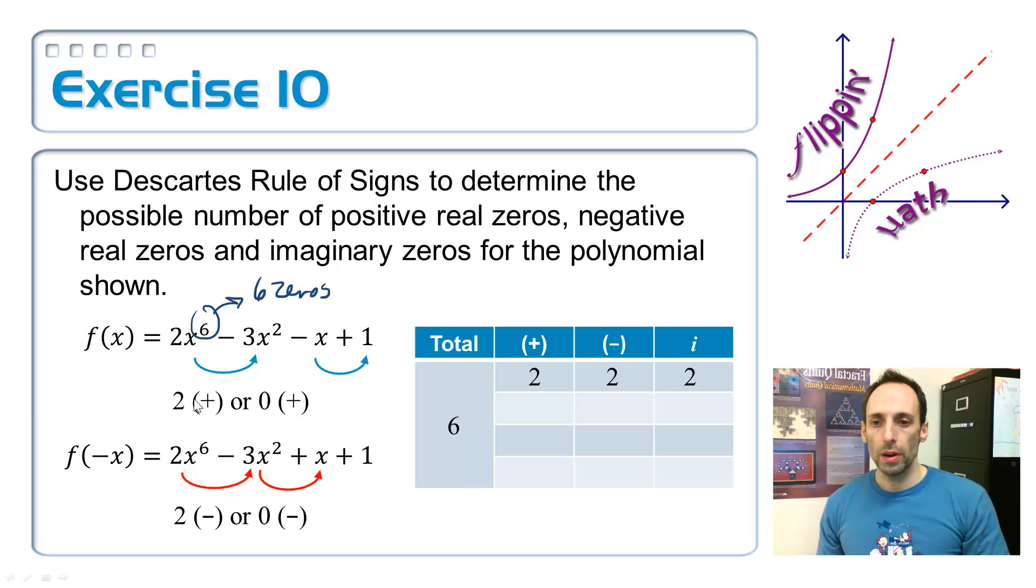So now I've already paired up the two with this two. Let's pair up the positive two with the negative zero. So maybe there are two positives with zero negatives. In that case, if I subtract the two from the six, that means I have four imaginary solutions possible.